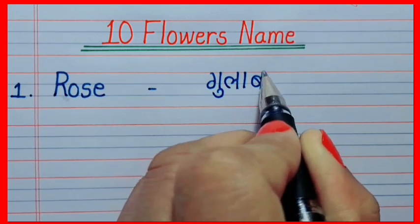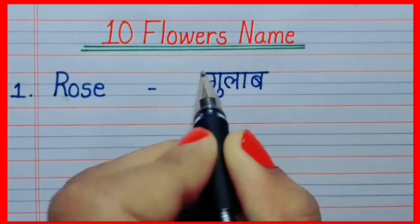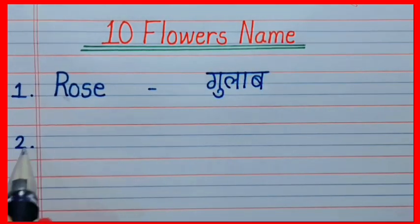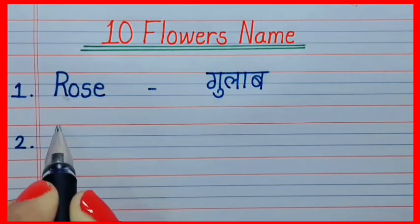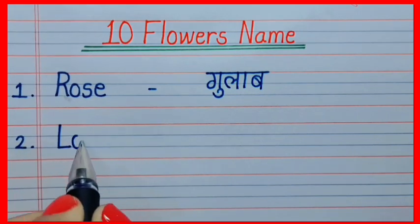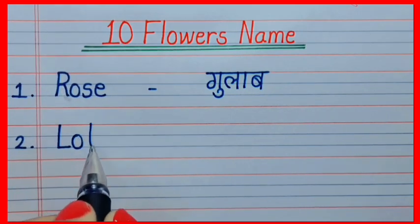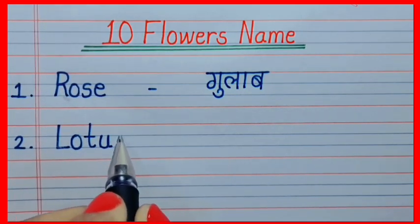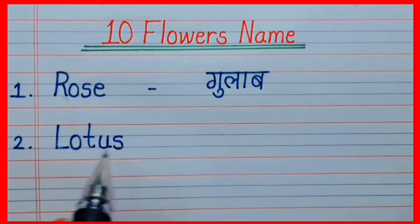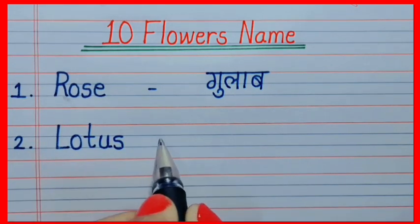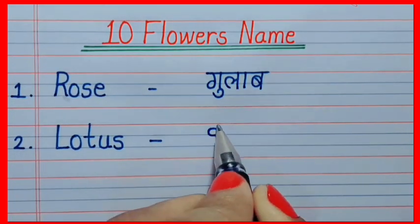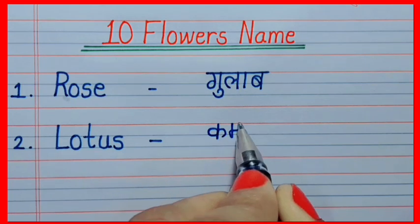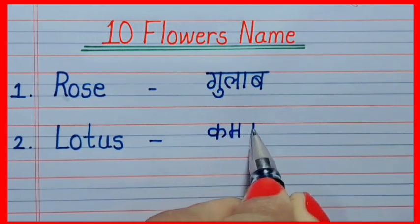Rose means Gulab. Second name is L-O-T-U-S, Lotus. Lotus means Kamal.